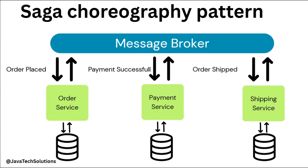So here we are going to cover what is the choreography pattern and then create one example of it using Spring Boot and REST APIs so that you can understand in real life how it is working. The choreography pattern is a way for microservices to coordinate with each other using events without a central controller telling them what to do.